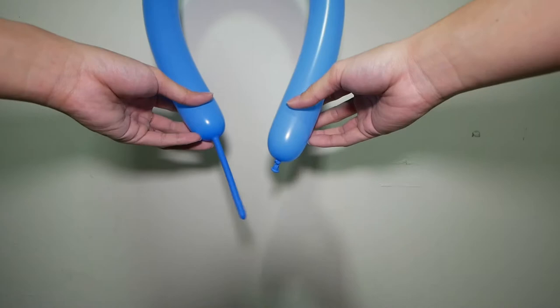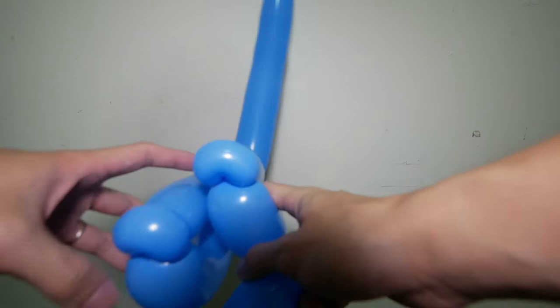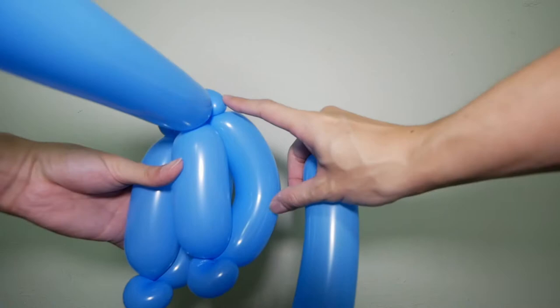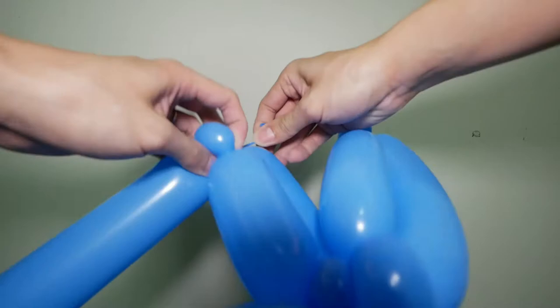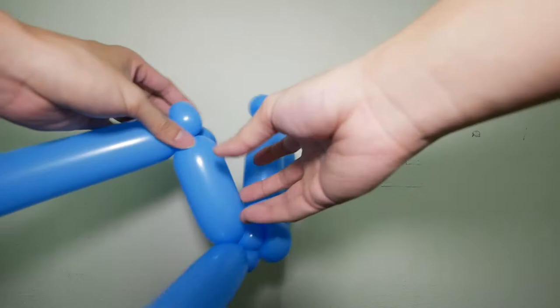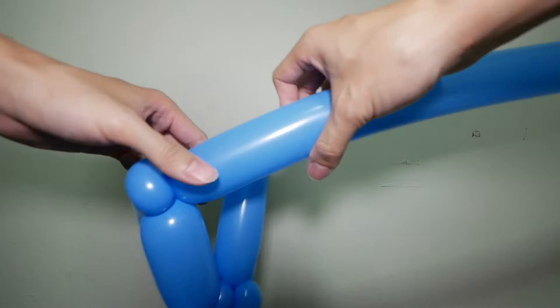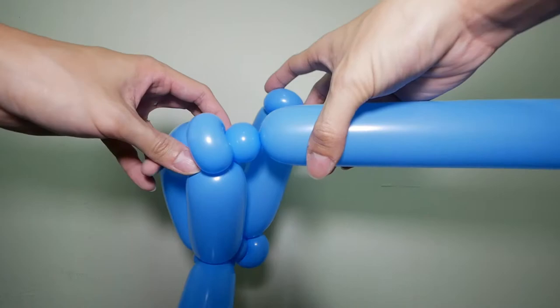Now inflate the next blue balloon. Tie it to the same place over here, at the same level. I'm going to do a bubble and connect it to the other pinch twist over here.